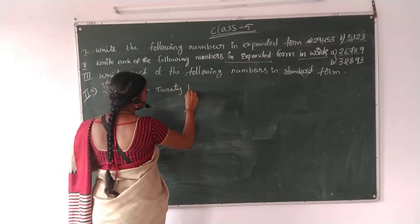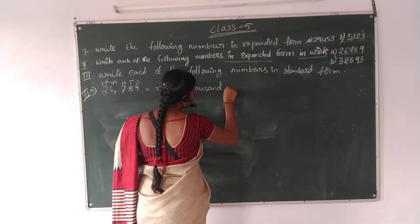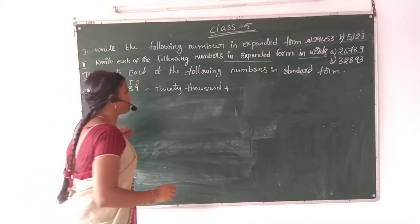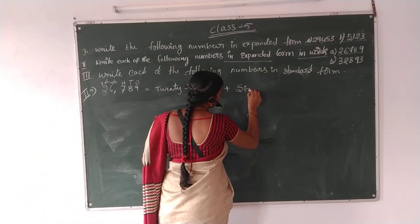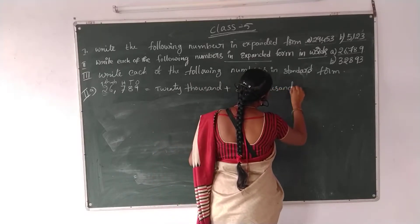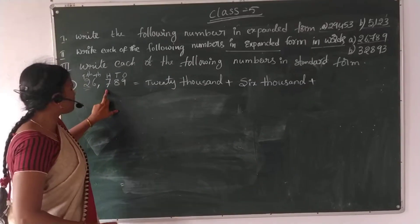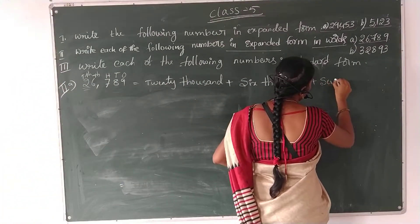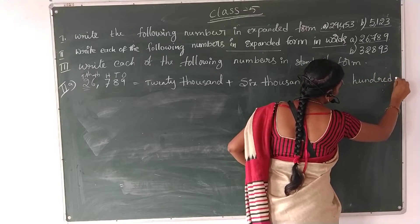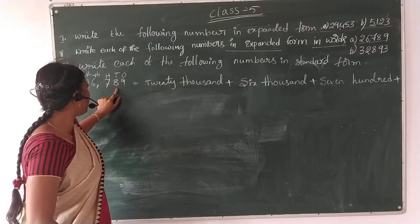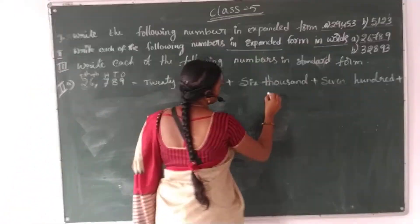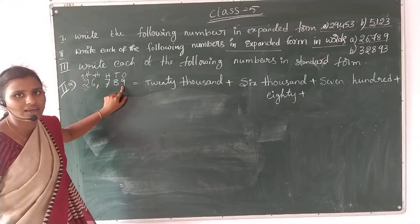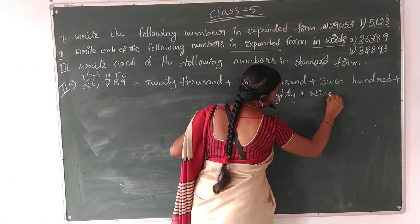20,000 plus 6 into 1,000 equals 6,000. Plus 7 into 100 equals 700. Plus 8 into 10 equals 80. Plus 9. Understood?